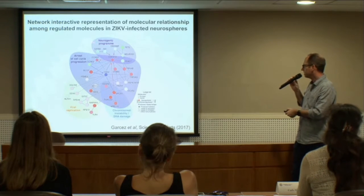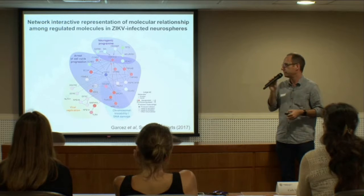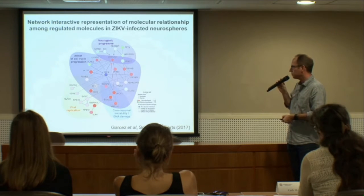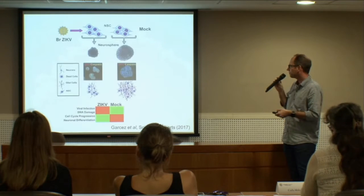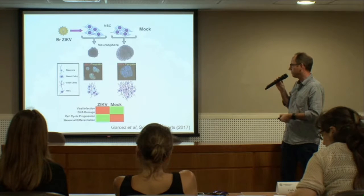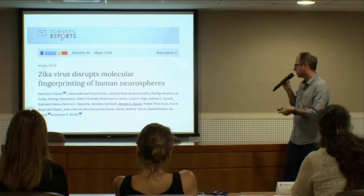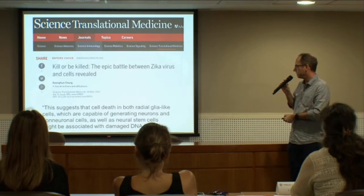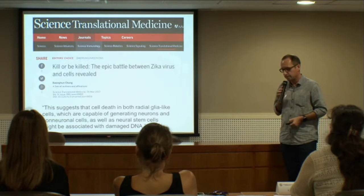To summarize all of the work in one slide: we described four different programs that were changed after infection. There are, of course, proteins associated with viral replication, as expected. There is a change in chromosomal stability and DNA damage that stops or arrests the cell cycle, which impairs the neurogenic program. We proposed a model in which proteins associated with viral infection and DNA damage increase, the cell cycle is blocked, and neurodifferentiation is also impaired. We published this paper, which received an interesting review in Science Translational Medicine highlighting the importance of using these models to study Zika.